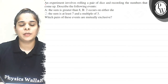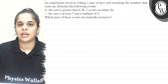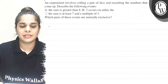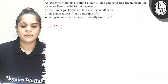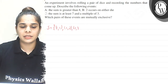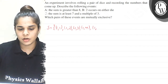So let's look at our experiment. Our experiment is rolling a pair of dice. My sample space equals: (1,1), (1,2), (1,3), (1,4), (1,5), (1,6). I fixed 1 in the first die here.